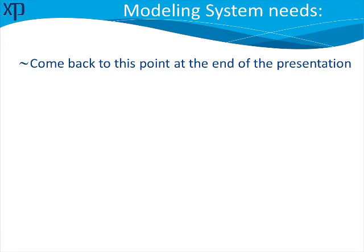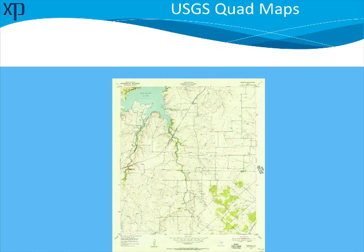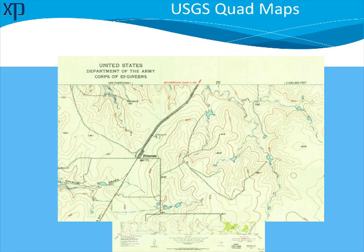We'll move on to the second point: terrain, and in particular as it relates to the 2D model. We all remember when our best hope for terrain information was to send a surveyor out or, for watershed studies at large scales, grab our trusty USGS quad maps — 10-foot contours in most places — and use those to delineate watersheds, see blue lines, take areas, and generally use those as a beginning approach to a watershed study.